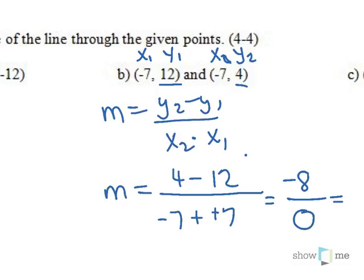Negative 8 over 0 is undefined. There is no slope for this line. It is too steep for us to measure. It is a vertical line.